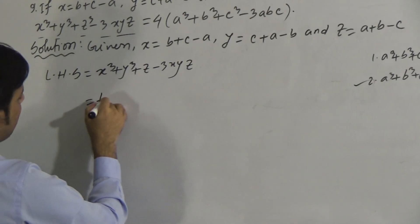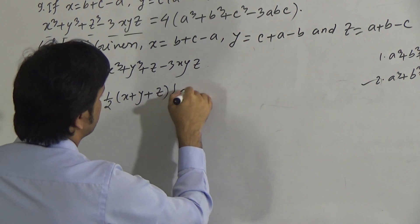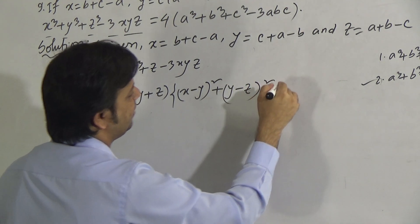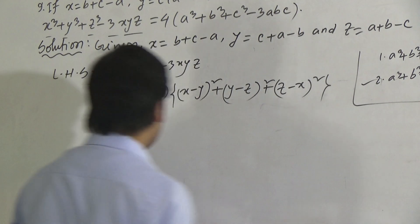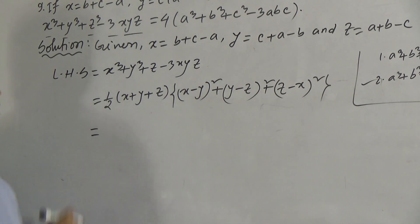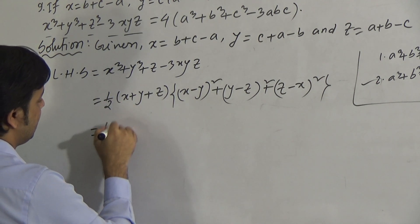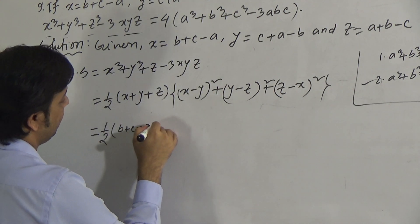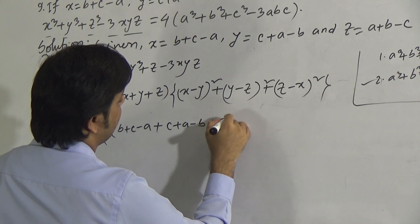Now we can put the values of x, y, and z since they are given. So we write: ½ into (b + c − a) + (c + a − b) + (a + b − c), then for (x − y)²: (b + c − a) − (c + a − b), which becomes (b + c − a − c − a + b) whole square.